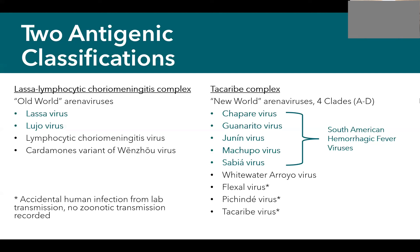The reason we're focusing on these seven today is that as a group, they are all associated with human viral hemorrhagic fevers. When people become infected, they have a nonspecific febrile illness at first, and as that illness worsens, they tend to have a lot of associated bleeding — hence the name hemorrhagic fever viruses. These tend to have very high mortality and require special precautions.